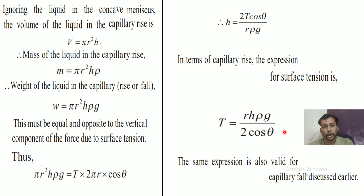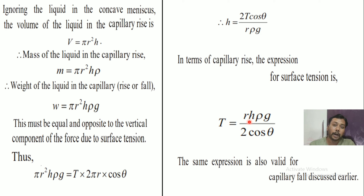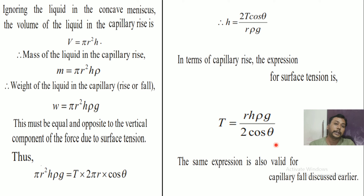The formula for capillary rise or fall also gives the surface tension as: T equals r·h·ρ·g upon 2·cos theta. From this formula, the surface tension of a liquid can be calculated, where r is the radius of capillary tube, h is the height of rise of liquid level inside the capillary tube, ρ is density of liquid, g is acceleration due to gravity, and theta is the angle of contact of solid and liquid.